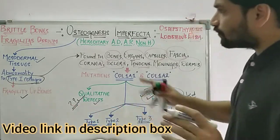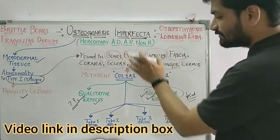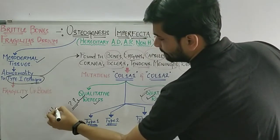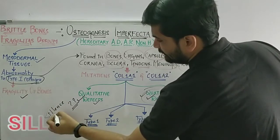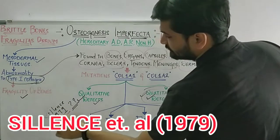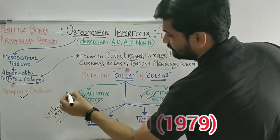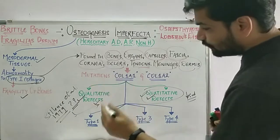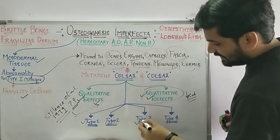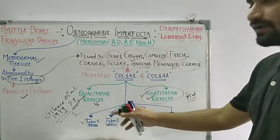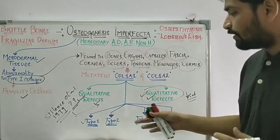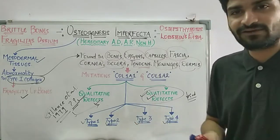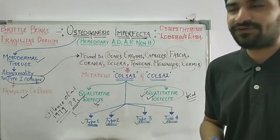There are mainly four types of osteogenesis imperfecta, according to the classification given by Silence et al. in 1979. This classification divides osteogenesis imperfecta into type 1, type 2, type 3, and type 4. All four types have distinct differences in clinical features, which we will discuss, along with histology and radiographic features.